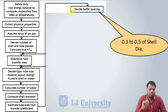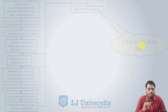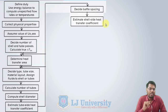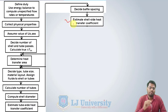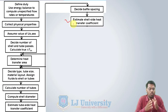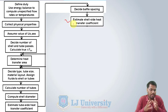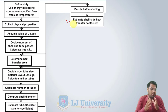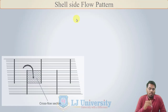We have already decided the baffle spacing, which is generally between 0.3 to 0.5 of the shell diameter. After that, we have to estimate the shell side heat transfer coefficient. The shell side heat transfer coefficient is very difficult to calculate. We have two methods: one is Kern's method and the second is the Bell-Delaware method. First, we will discuss the basic method, which is Kern's method, and in upcoming videos, we will discuss the Bell-Delaware method.